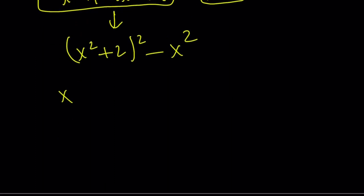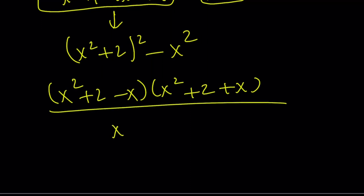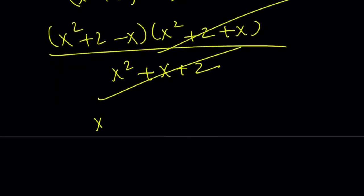this can be written as x squared plus 2 minus x times x squared plus 2 plus x. But this was the numerator, remember? And the denominator was x squared plus x plus 2. These two are the same. They cancel out, leaving us with the answer x squared minus x plus 2.